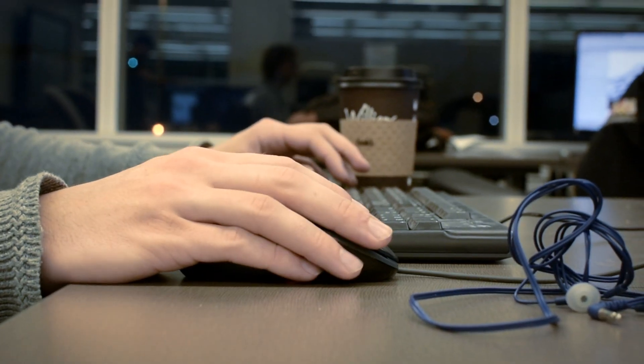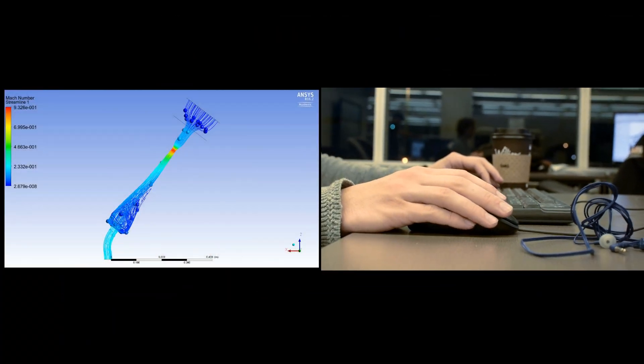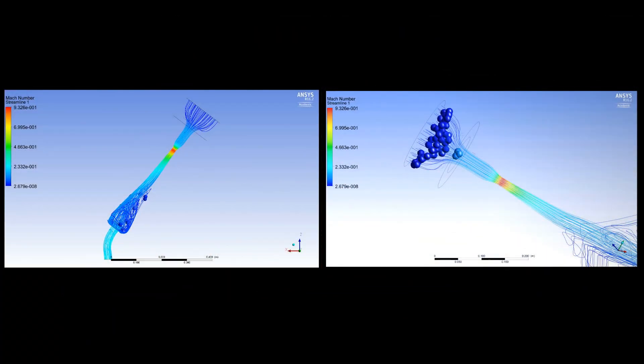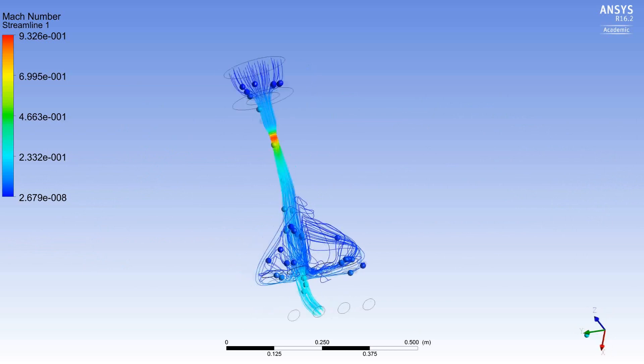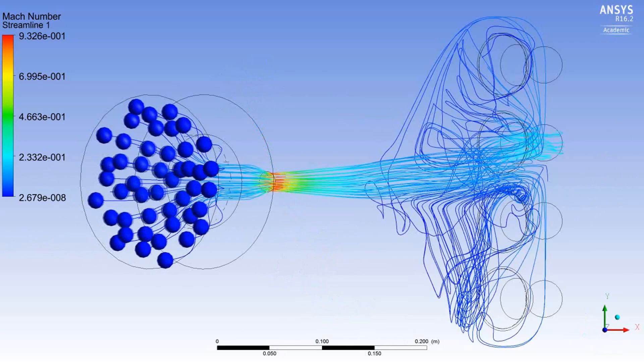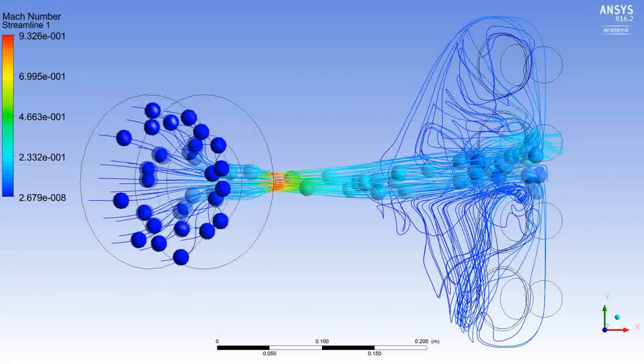We start on the fluid side, we do a parametric design study to try to optimize the geometry for the restrictor. Once we have a design we're happy with there, we can also try a few different designs for our intake plenum, try to minimize flow losses and get a good pressure distribution across all four of our engine cylinders.